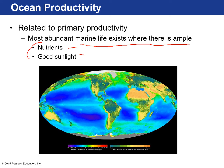A satellite image shows areas of high productivity in green and yellow — close to land is good because nutrients come off the land via weathering of rocks. There are also areas of upwelling like the equator, where the trade winds push water away from the surface, bringing nutrient-rich deeper water up. Upwelling off the coast of Peru and Chile makes that region great for fishing.